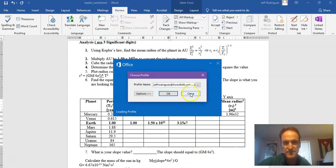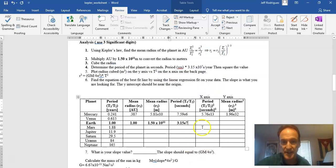I'll do this one real quick. This will be 1 times 3.15 EE to the 7th. And that value squared. 9.92 EE to the 14th. This value cubed, 1.5 times 10 to the 11th cubed, is going to be 3.38 EE to the 33.